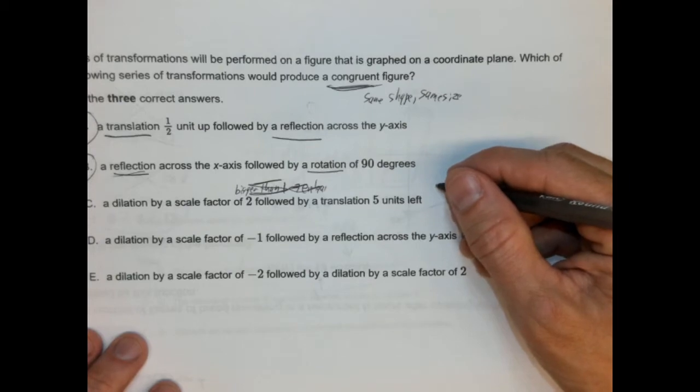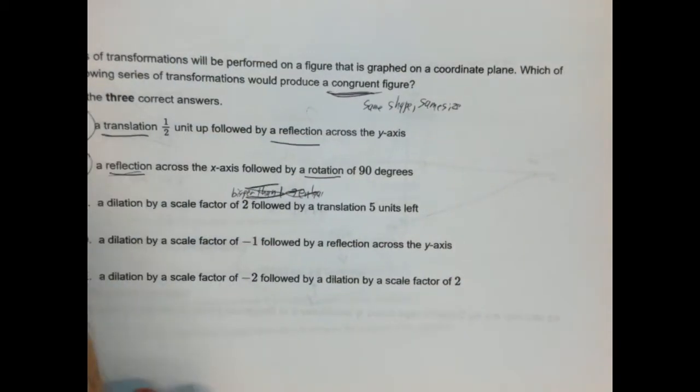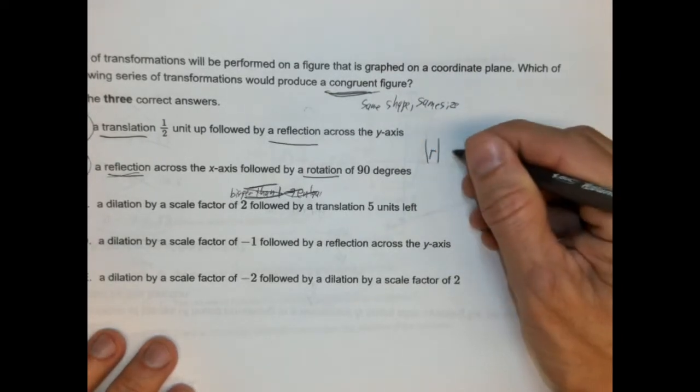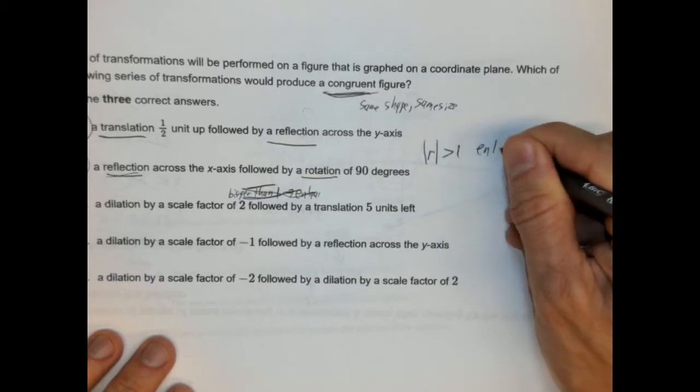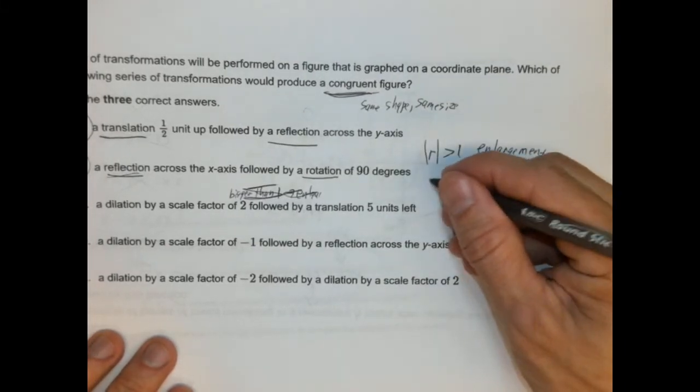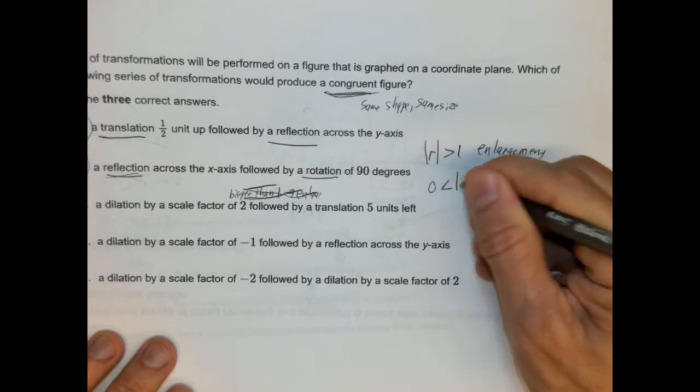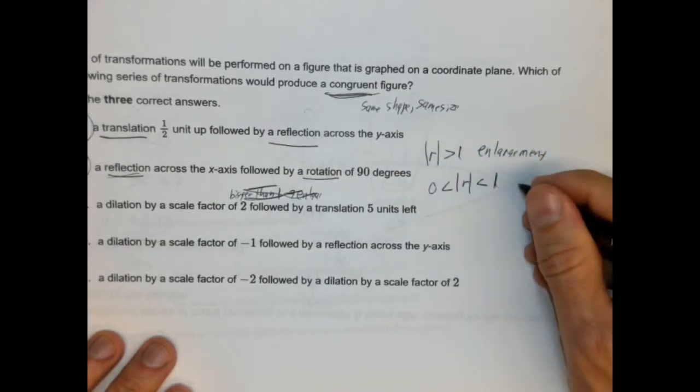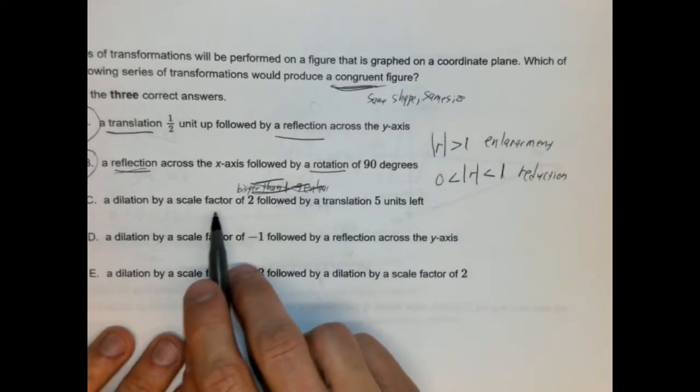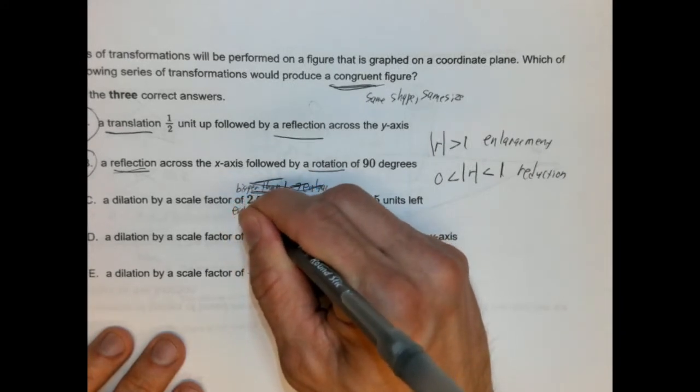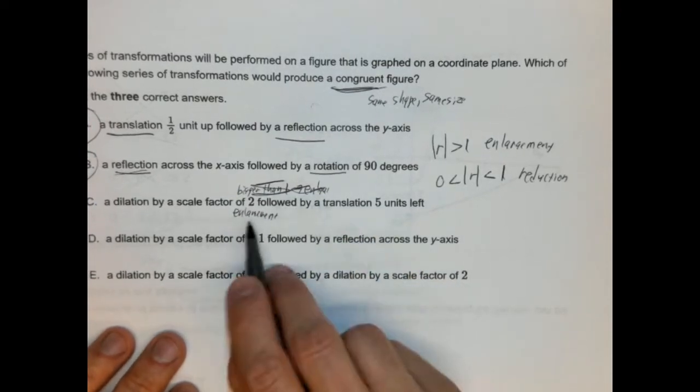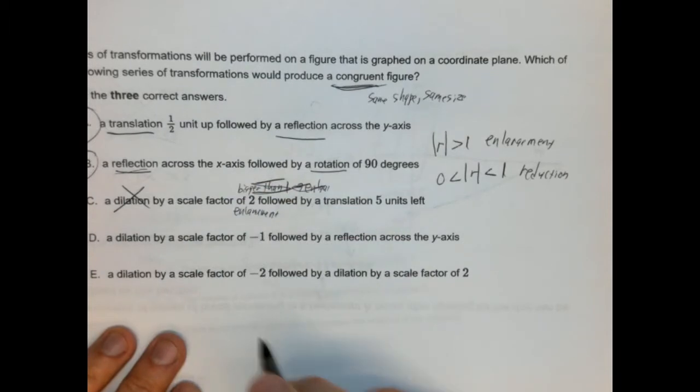Let's write it a little better so it's not so crappy. So, scale factor, if the absolute value of the scale factor is larger than one, it's going to be an enlargement. If it is in between zero and one, it's going to be a reduction. Now, these absolute value symbols are important. We'll come into play in a moment. So, this is definitely an enlargement. So, we're growing the figure. And then it's shifting five left. So, we never shrunk it back down. So, congruency was lost. This is not it.